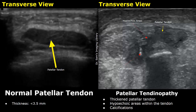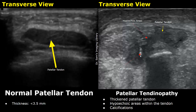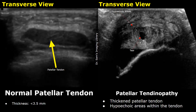This is a transverse image showing the patellar tendon. Here is an image of tendinopathy with a thickened patellar tendon filled with hypoechoic areas, and it even has calcifications. Here is another transverse image of patellar tendinopathy showing a very thickened tendon.